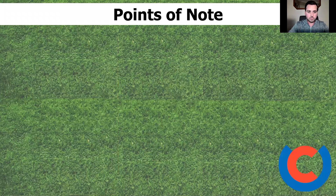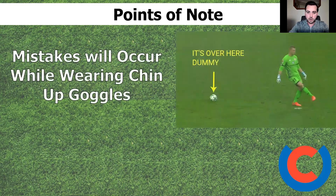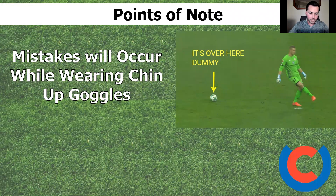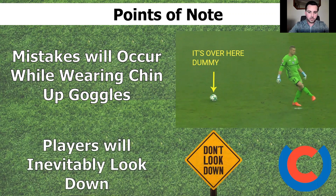There are a couple of things I want to address from conversations with coaches and practitioners who use the goggles. First: mistakes will occur when wearing the chin-up goggles — that's not an issue. Another point is that players will inevitably look down, and this work isn't suggesting you stop players from looking down. It's about guiding their visual attention towards more pertinent information in the environment while they're playing. And as the studies have identified, the benefits of the goggles don't come while they're on — the benefits come after you've taken them off.